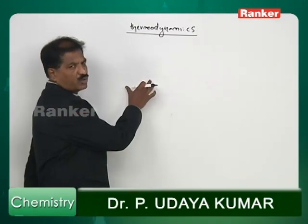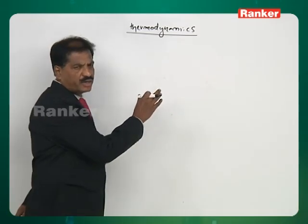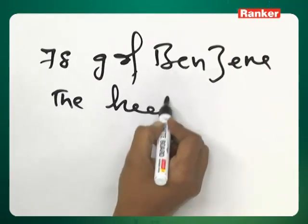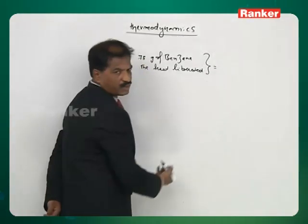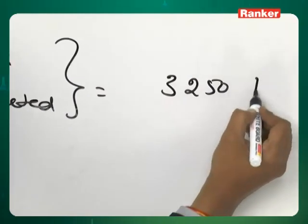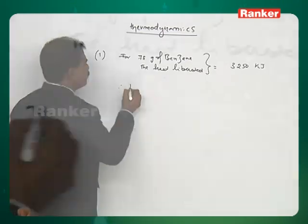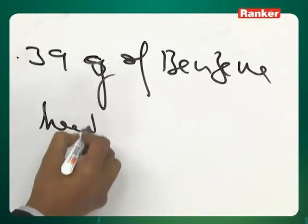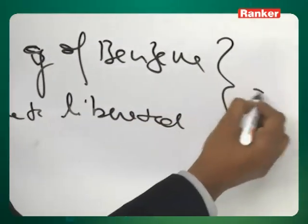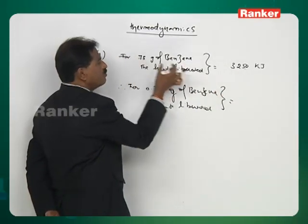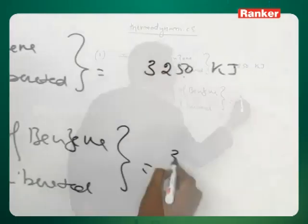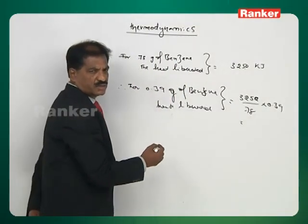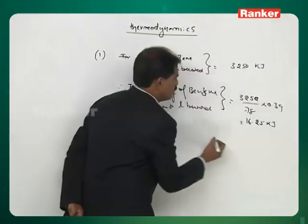The enthalpy of combustion of one mole of benzene is given. For 78 grams of benzene the heat liberated is 3250 kilojoules. Therefore for 0.39 grams of benzene, heat liberated is 3250 divided by 78 into 0.39, which gives 16.25 kilojoules. Answer is B.